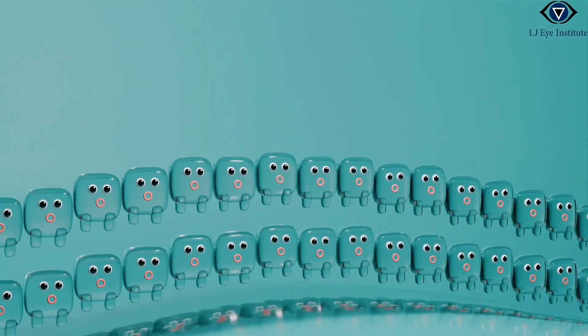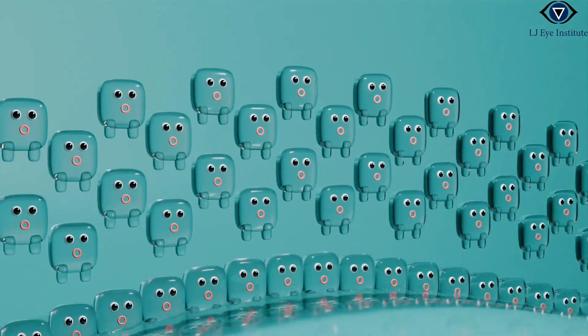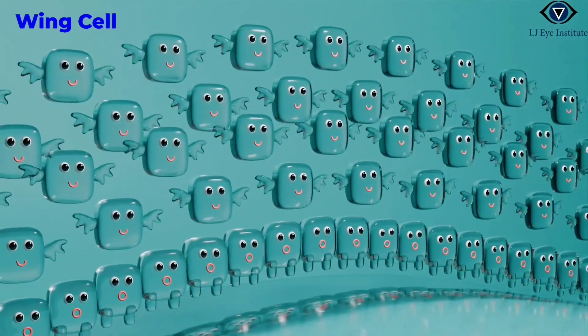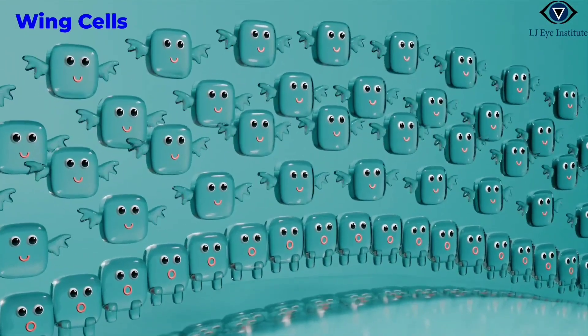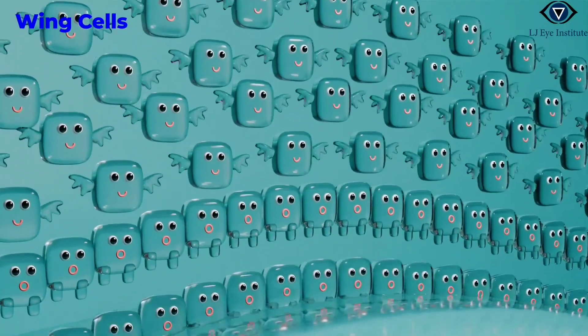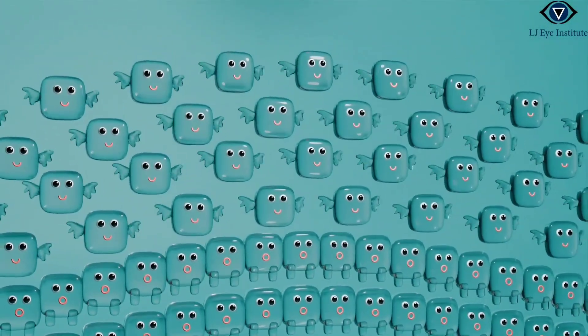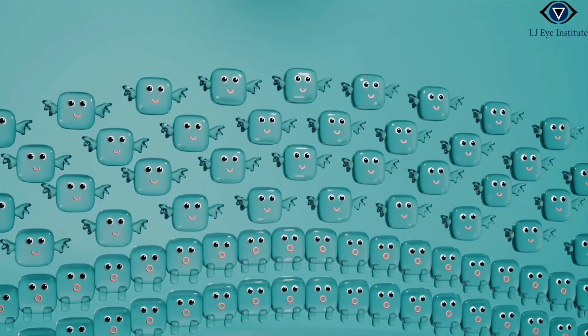As cells ascend through wing and superficial layers, they mature and adopt specialized functions to fortify the cornea. Functionally, these cells serve as a strong defense against external injuries. The outermost layer, meticulously armed with tight junctions that bind its cells together, serve as a critical shield against invading pathogens.